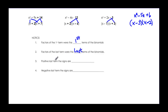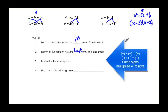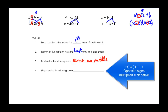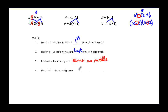Now let's look at sign patterns. When we have a positive last term, the signs inside the binomials are the same. Look at the middle term to determine which sign: positive 9 middle means both signs are positive; negative 5 middle means both signs are negative. For a negative last term, you need opposite signs — a negative times a positive — so you have to find the right combination, but they will always be opposite.